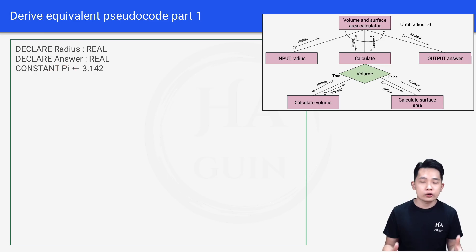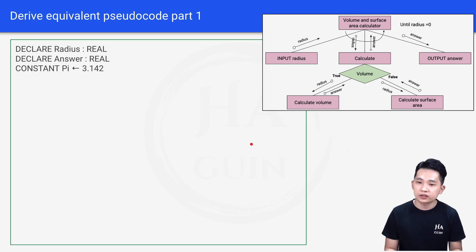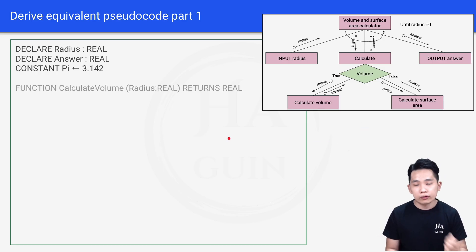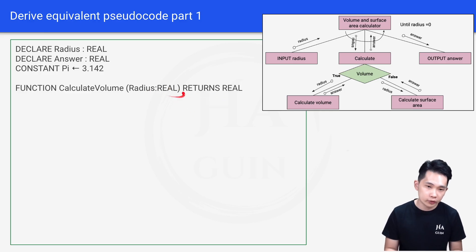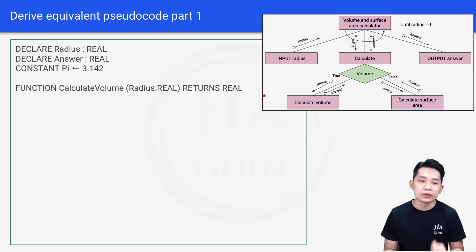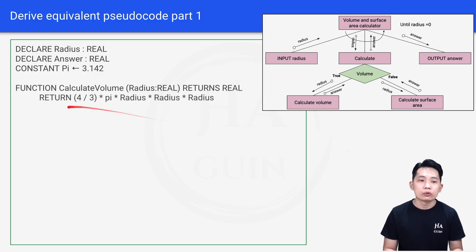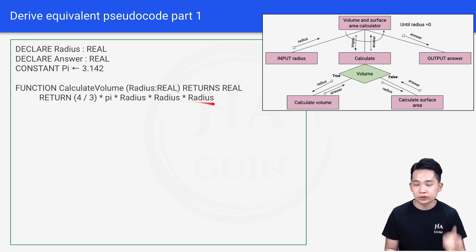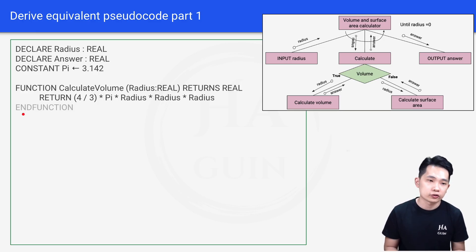We'll be creating functions or procedures based on the modules defined in the structured chart. Starting with the Calculate Volume module: FUNCTION calculateVolume(radius : REAL) RETURNS REAL. Inside this function: RETURN 4/3 × pi × r × r × r. This is the formula for the volume of a sphere — 4/3 pi r cubed. Then we end the function.